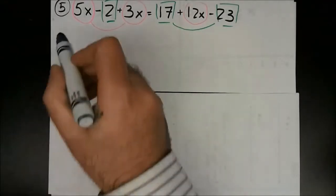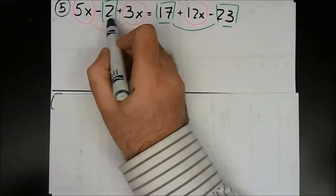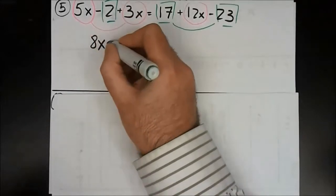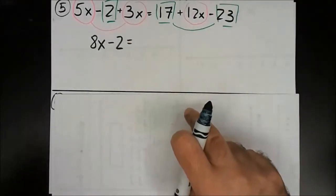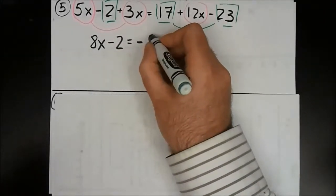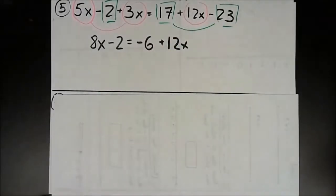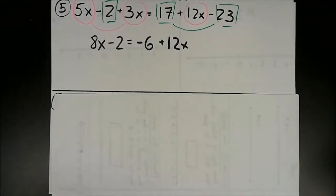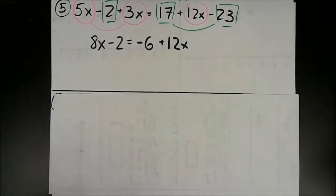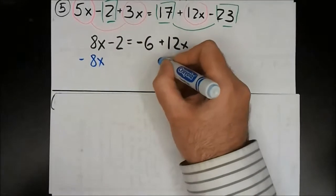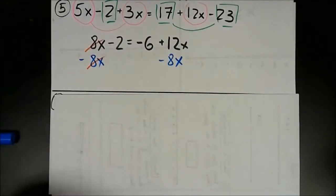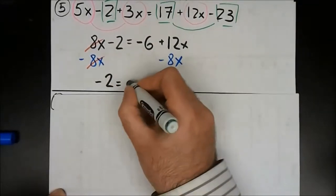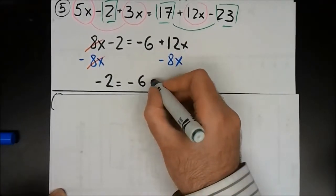So let me go ahead and do that. 5x plus 3x — that's 8x. The constant just carries over. 17 minus 23 — that minus does belong to the constant — so 17 minus 23 is negative 6, plus 12x. Now this looks just like problems 1 and 2. I've got to get rid of either the 8x or the 12x. I go for the smaller one, as always. It's gone, which means I get negative 2 equals negative 6 plus 4x, because 12x minus 8x is positive 4x.